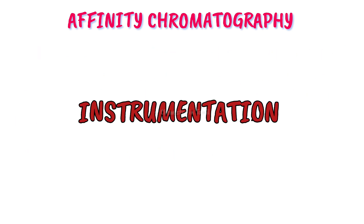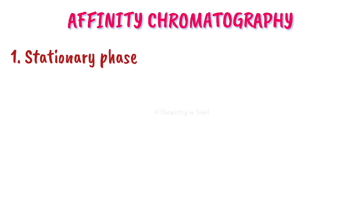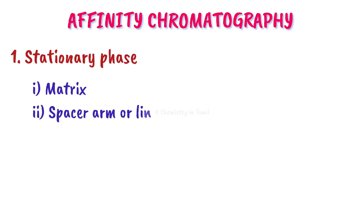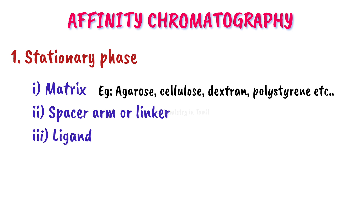Let's look at the stationary phase. The stationary phase has three components: the first one is the matrix, the second one is the spacer arm or linker, and the third one is the ligand. Matrix examples include agarose, cellulose, dextran, polystyrene, polyacrylamide, silica, etc.